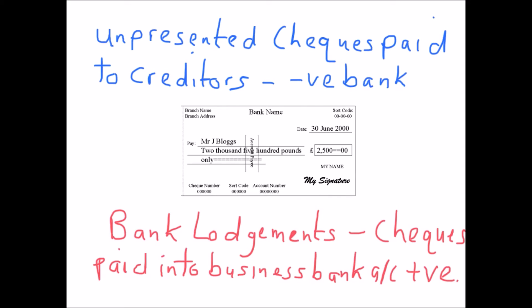A check can be written out to pay our creditor, or a check can be sent to us by our customers — in which case it has to be paid into our business bank account. In both cases, the process of sending a check to a supplier or receiving and paying one into our bank account results in a delay in time, and that's the whole point of the bank reconciliation statement. If we write a check and send it via post — which usually takes two days — by the time our supplier receives it and pays it into their bank account, that's probably another day, so you're already at three days. A check usually then takes another three to four working days to go through the banking system.